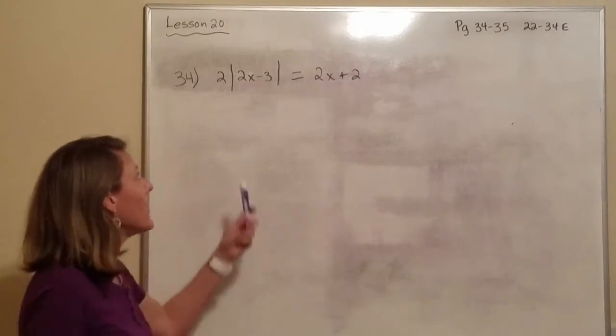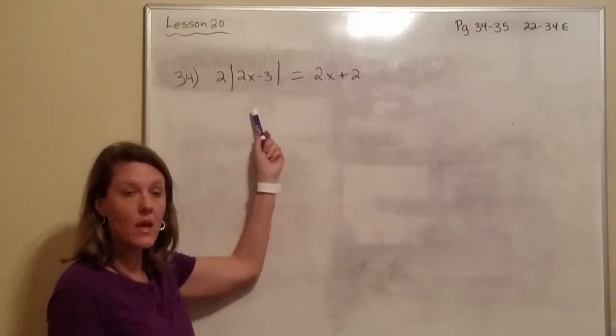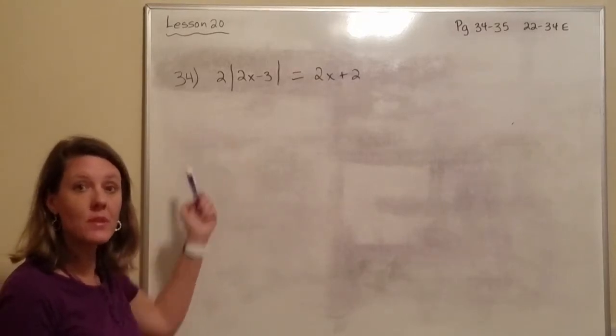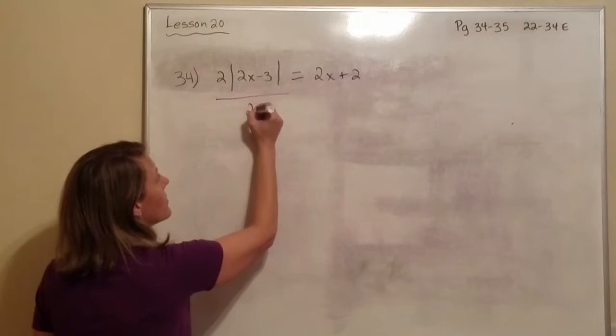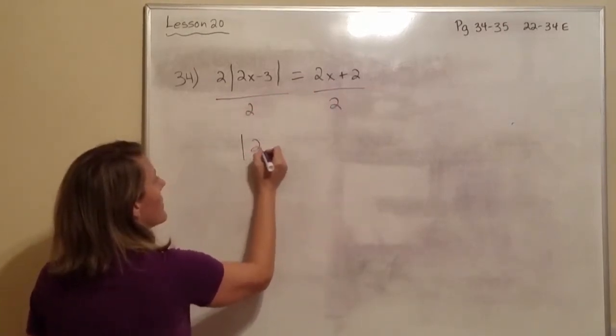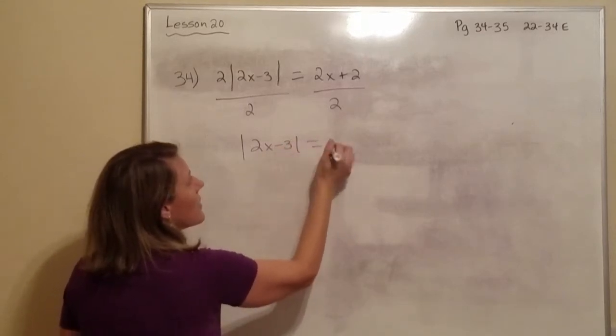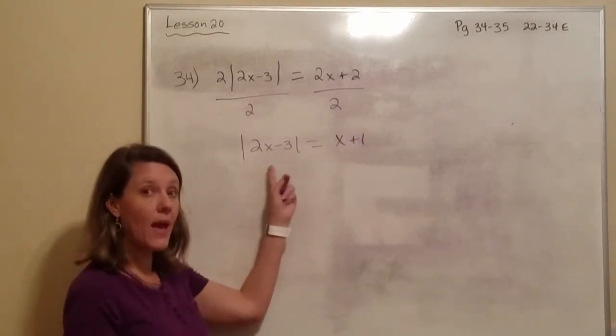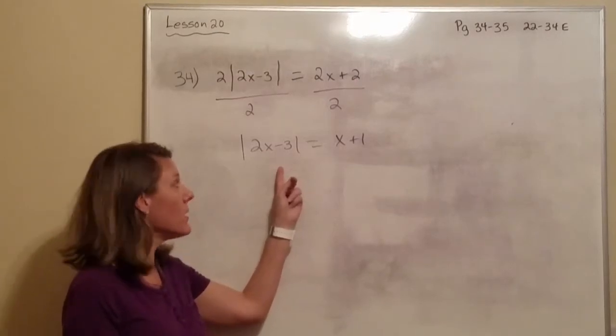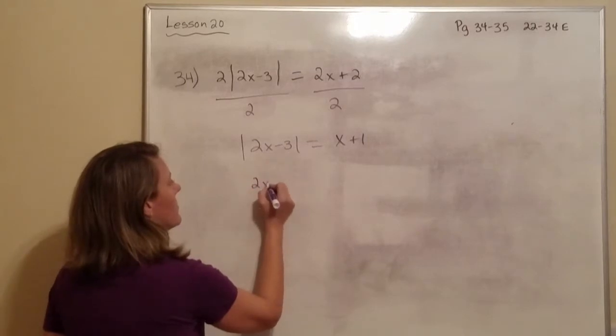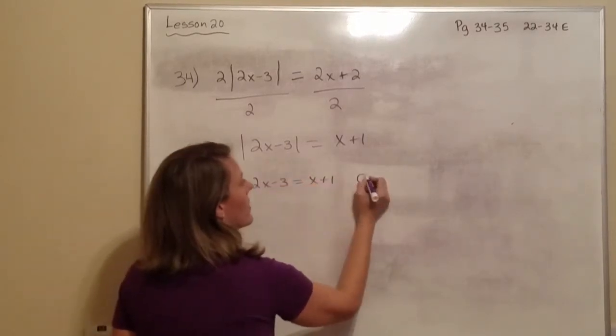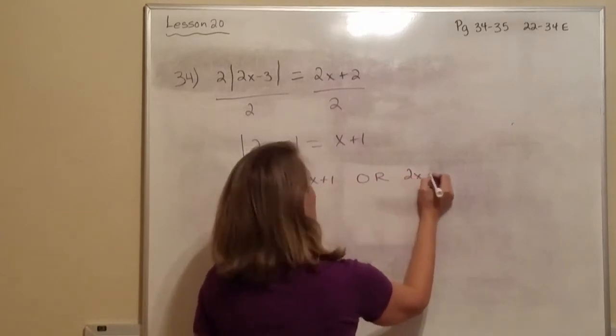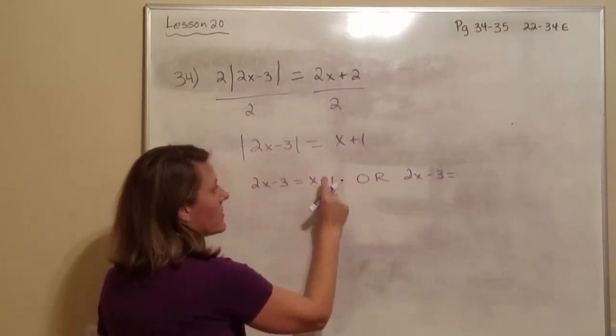Okay, number 34. Again, we're going to want to get our absolute value all by itself. Well, we have a 2 being multiplied sitting out here. So we need to get rid of that. And the opposite of multiply is divide. So I'm going to divide both sides by 2. And then bring down this. Well, 2 divides into both of those. And it becomes x plus 1. Alright. So do we have our absolute value by itself? Yes, we do. So now we can split it apart. And it's got to be the opposite of this for the second part. So it'd be a negative x minus 1.